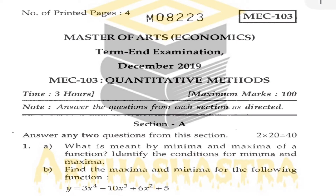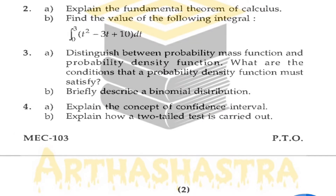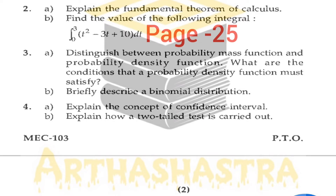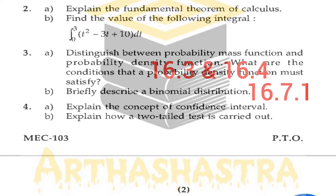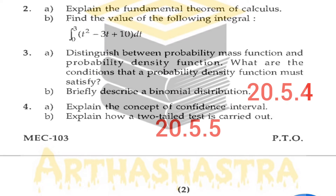Now coming to the December 2019 question paper. Question 1 is based on the concept of minima and maxima — you can find this in Block 2, Unit 4. Question 2 is from Block 3, Unit 7; the fundamental theorem of calculus is in section 7.9. Part B is a solved question from the book; find its solution on page number 25 from Book 3. Question 3 is from Block 5, Unit 16 — refer sections 16.3 and 16.4. Question 4 is from Block 6, Unit 20; Part A is from section 20.5.4 and Part B from section 20.5.5.